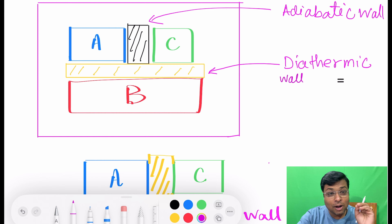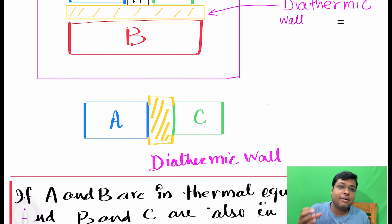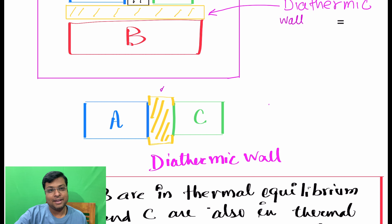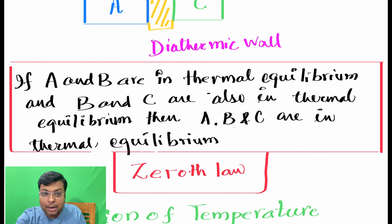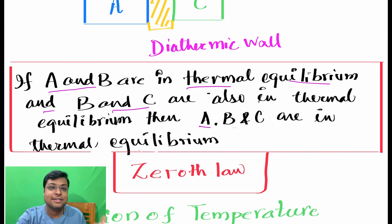Finally, all three bodies A, B, and C will have the same temperature — they will all be in thermal equilibrium. So even if you then place a diathermic wall between A and C, you will see no change in their temperatures, because they already have the same temperature.